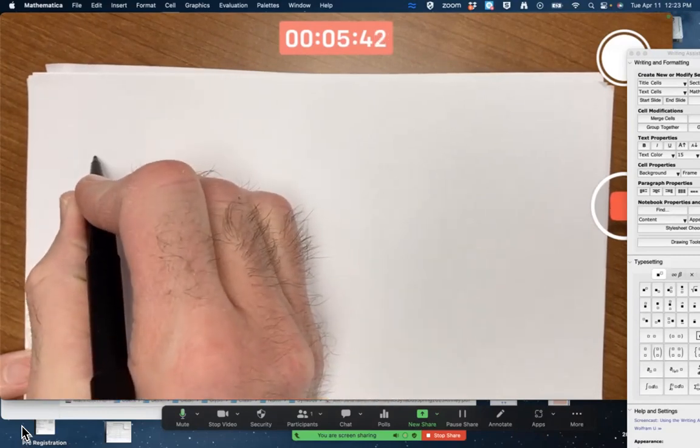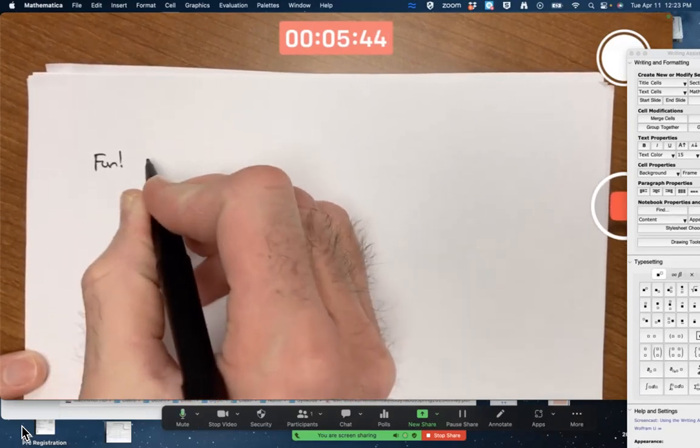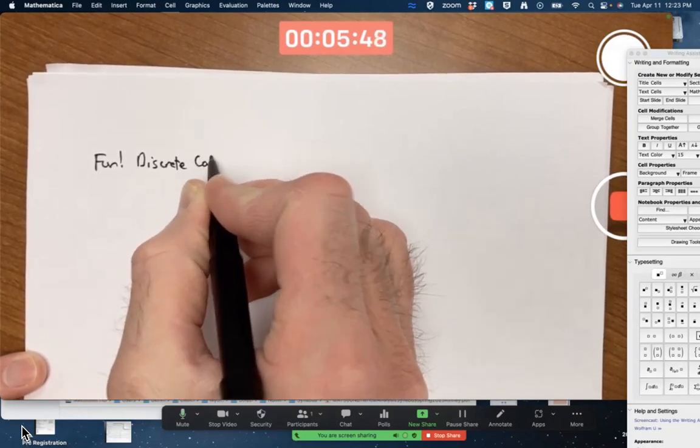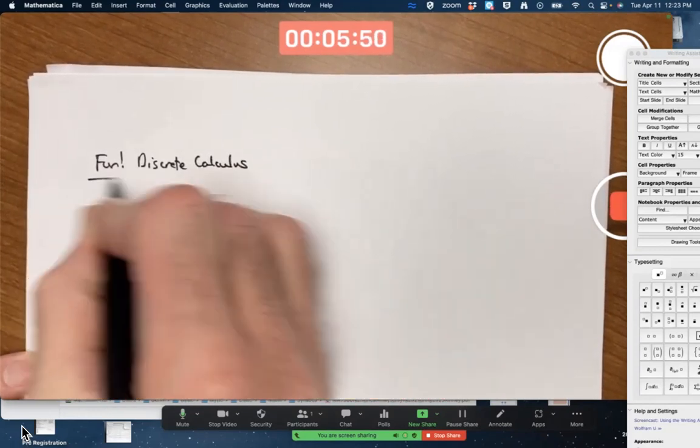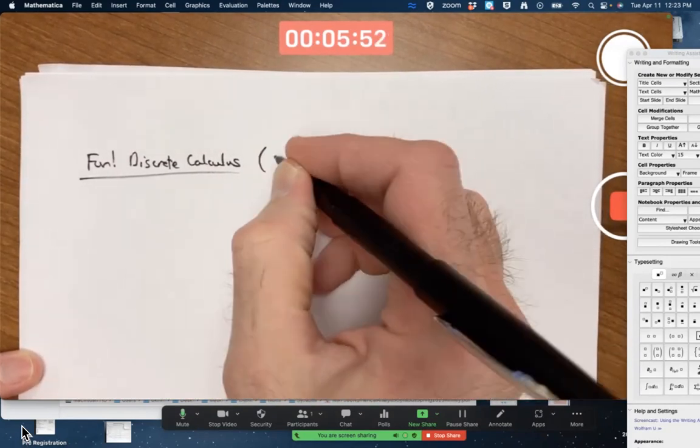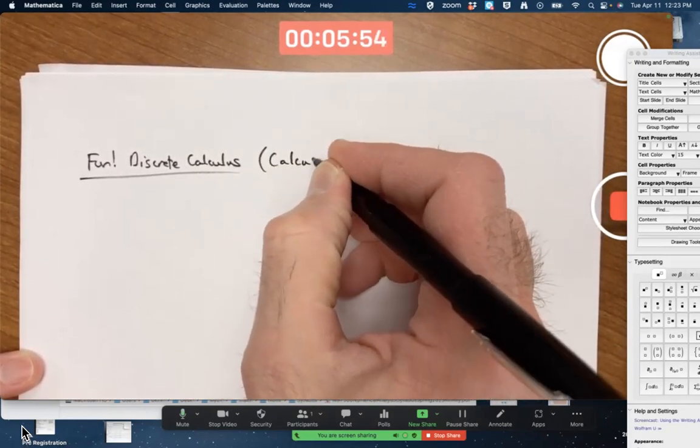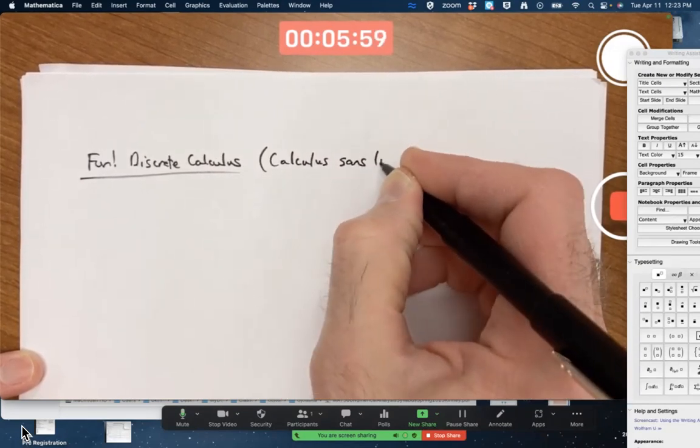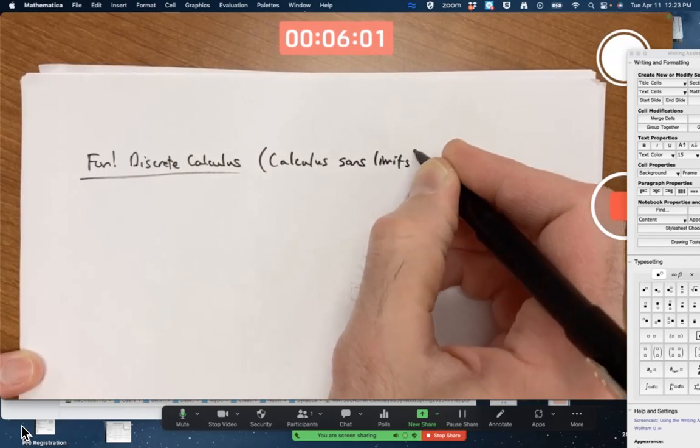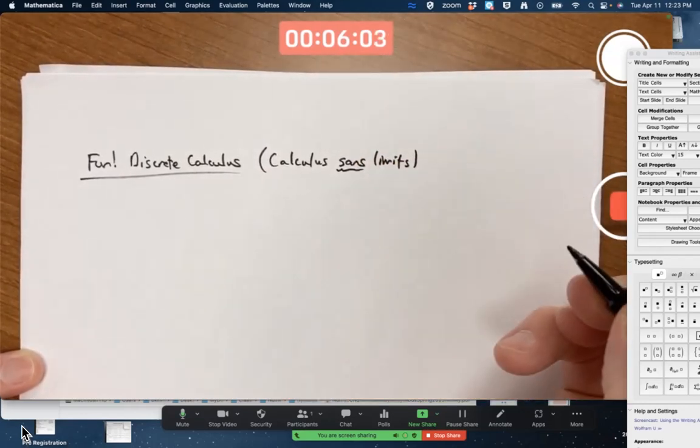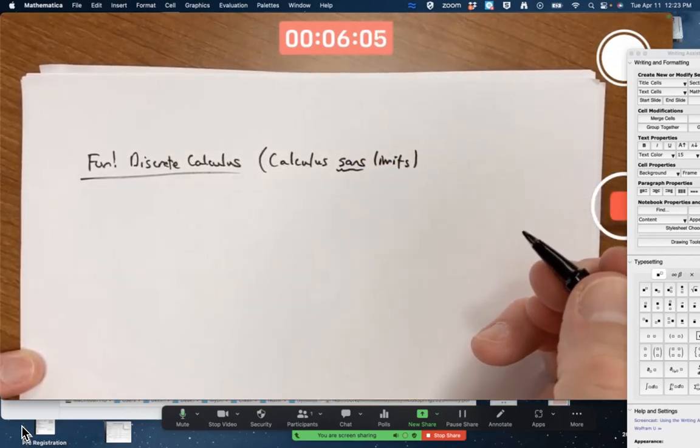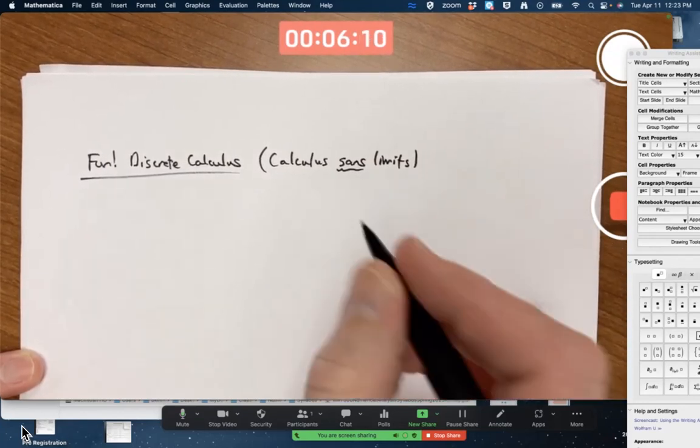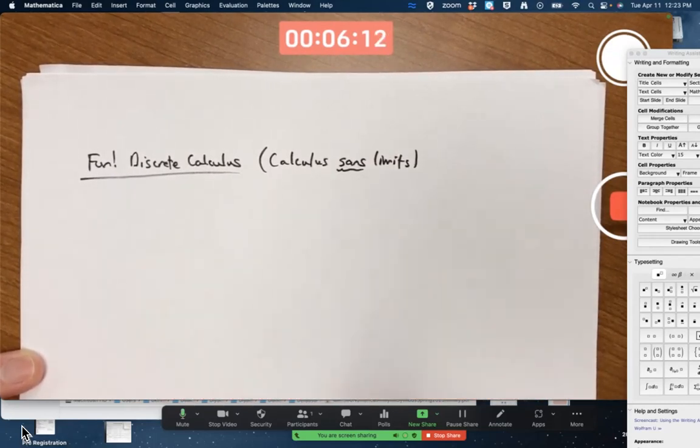So once again, we consider the fun subject of discrete calculus. Yay. You could call it, if you want to be extra fancy about it, calculus sans limits. What's sans? Well, it's a French word for without. So if you want to say without in a fancy way, say sans. Sans, calculus sans limits. Sorry that I mangled the French.